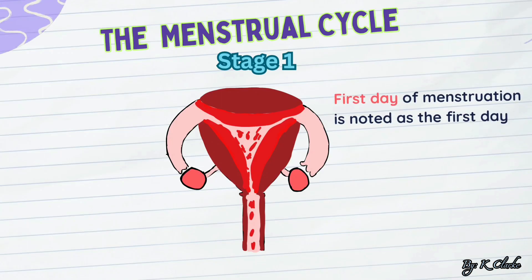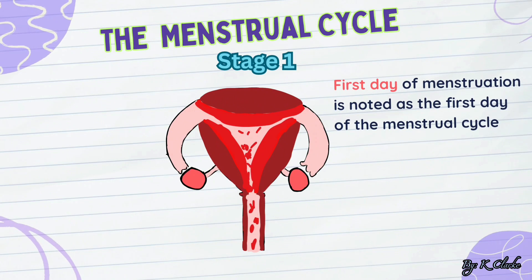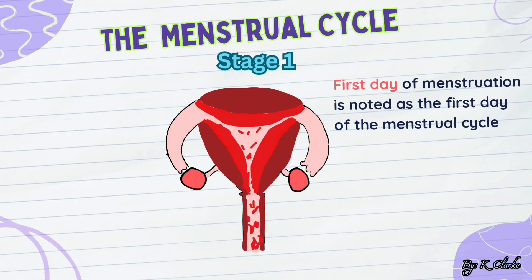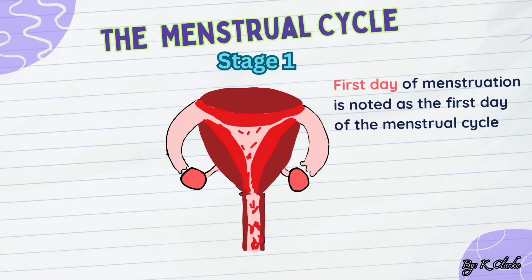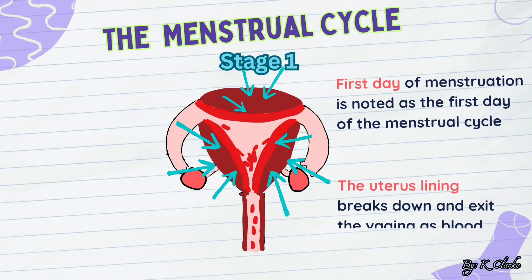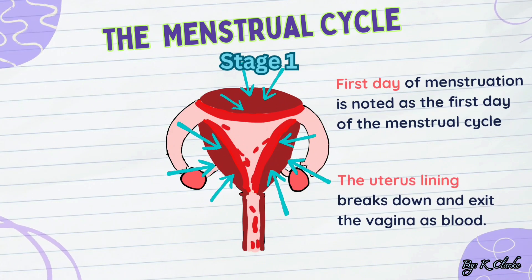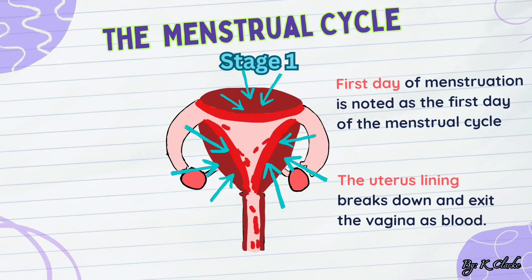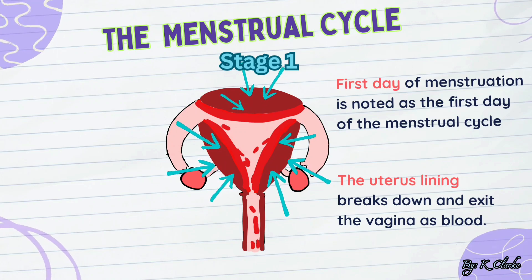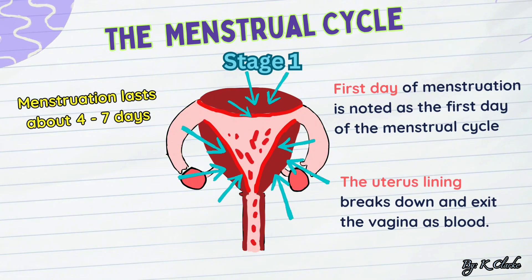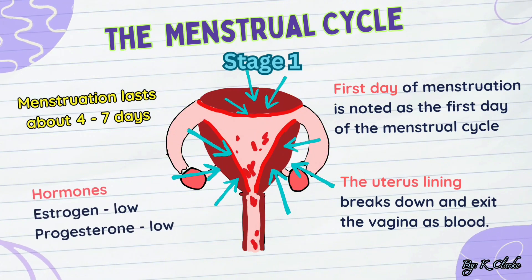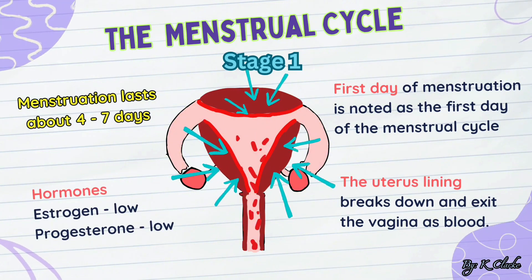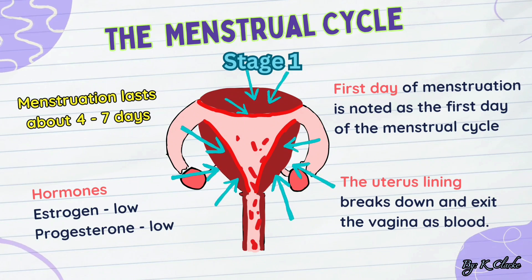Stage one: menstruation. The first day of the menstrual cycle is the first day of menstruation. During menstruation, the uterus lining, or the inner walls of the uterus, breaks down and exits the vagina as blood. The period lasts about four to seven days.